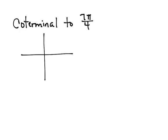7 pi over 4 would be in the fourth quadrant, approximately right here. If you want to think of it this way, that's 1 and 3 fourths pi.